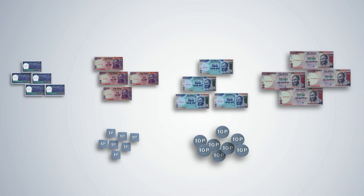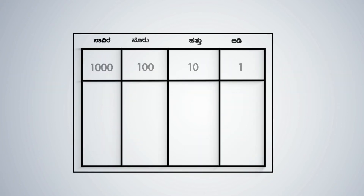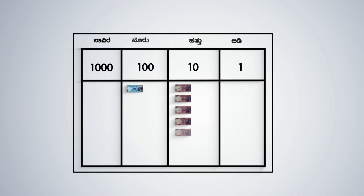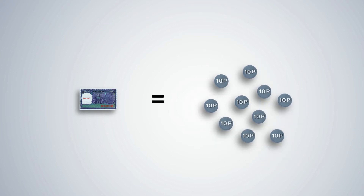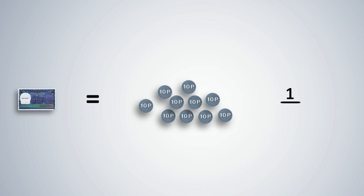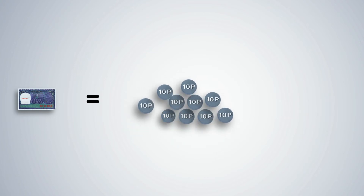With these, you can revise the concept of regrouping by tens. We can exchange 1 thousand-rupee note for 10 hundred-rupee notes, a 100-rupee note for 10 ten-rupee notes, and a 10-rupee note for 10 one-rupee notes. 1 rupee can be exchanged for 10 ten-paise coins. So 1 ten-paise coin is written as a fraction 1 upon 10, or 1 tenth of a rupee. 4 ten-paise coins are represented as 4 upon 10, or 4 tenths of a rupee. 9 ten-paise coins are represented as 9 upon 10, or 9 tenths of a rupee.